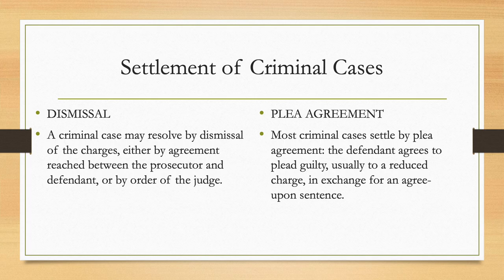Criminal cases can be settled either by dismissal, which can happen by order of the judge, but also by agreement reached between the prosecutor and defendant, or more commonly by plea agreement. Most criminal cases settle by plea agreement where the defendant agrees to plead guilty, usually to a reduced charge, in exchange for an agreed-upon sentence.